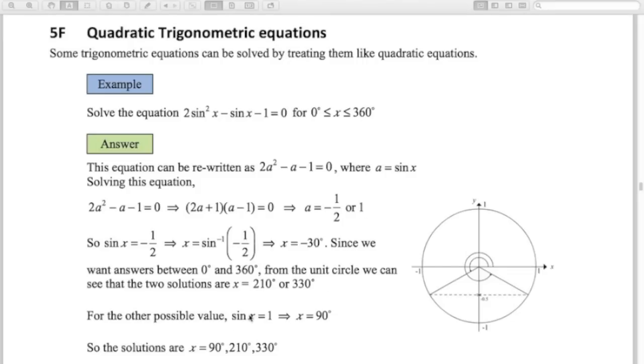From the other possible values, sine of x equals 1, there's only one value where the sine value is 1. Remember, sine value is on the y-axis, and that is 90 degrees. So there we've got our three solutions for this equation.